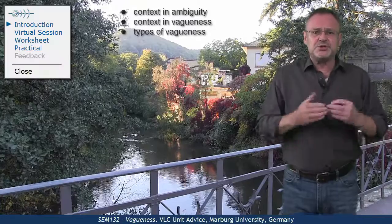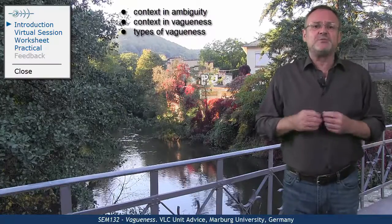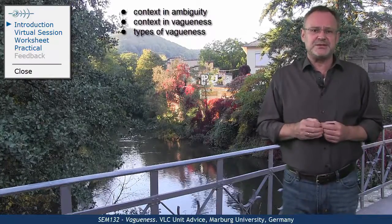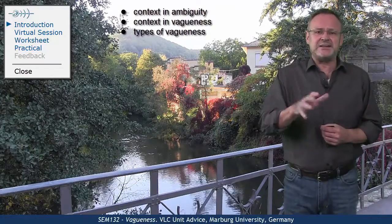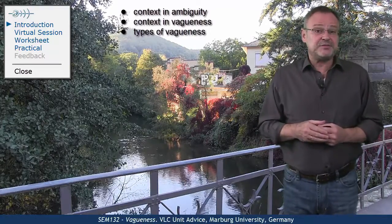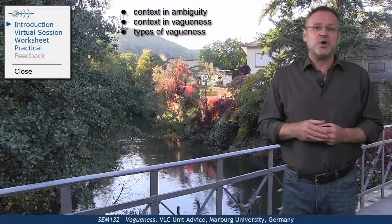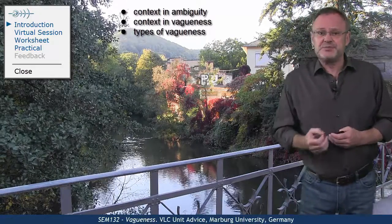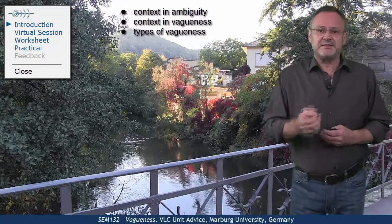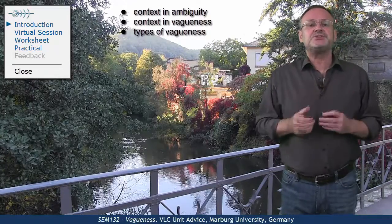Hello. This unit builds upon the unit on ambiguity. Whereas the context of use usually selects one of the meanings of an ambiguous expression, in cases of vagueness the context can add information that clarifies the meaning of the vague expression. In fact, there are various types of vagueness and they will all be discussed in this unit.